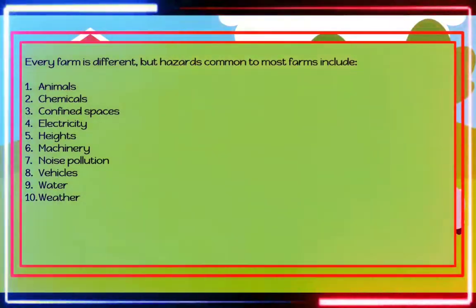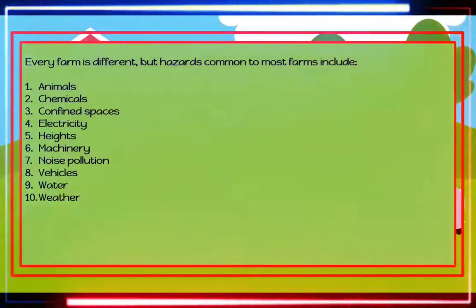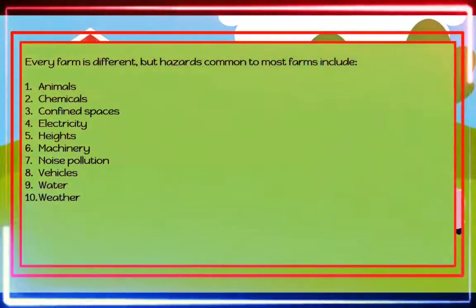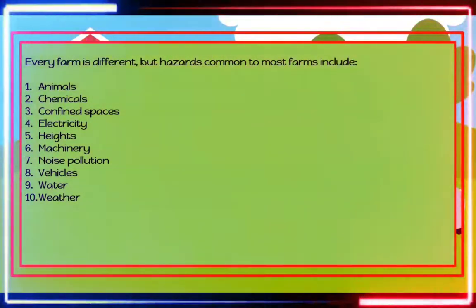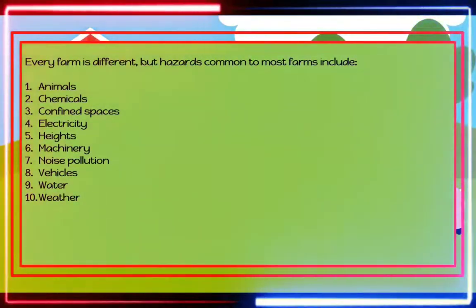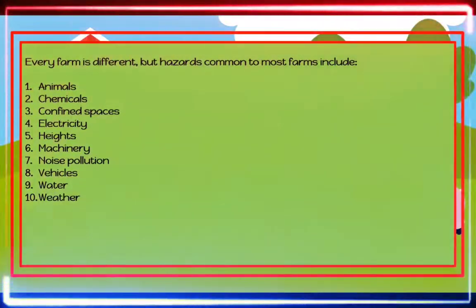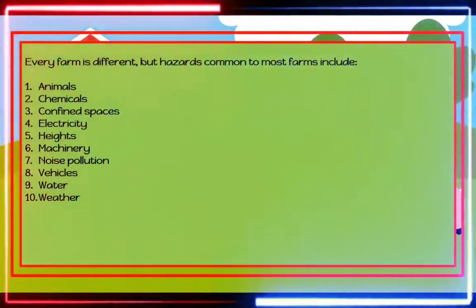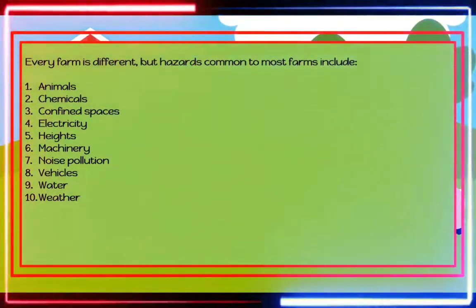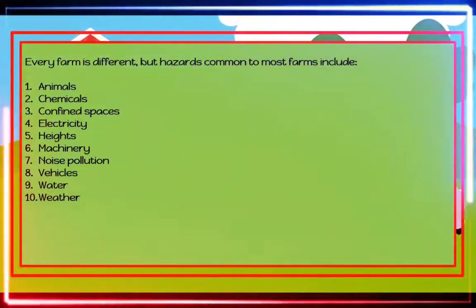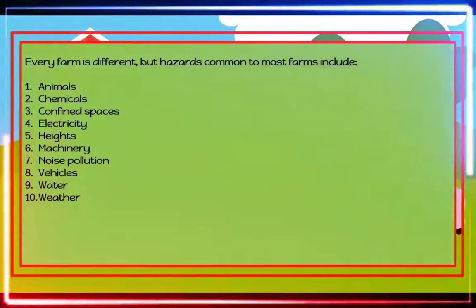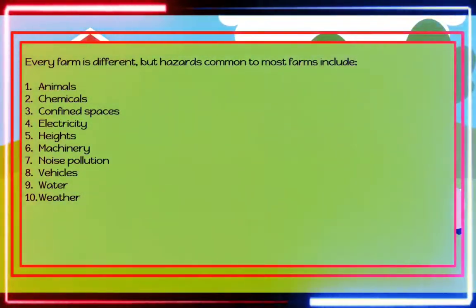Hazards common to most farms include: Number one, animals. Injuries inflicted by animals can include bites, kicks, crushing, ramming, trampling, and transmission of certain infectious diseases such as giardia, salmonella, ringworm, and leptospirosis. Number two, chemicals. Pesticides and herbicides can cause injuries such as burns, respiratory illness, or poisoning. Number three, confined spaces such as silos, water tanks, milk vats, and manure pits.